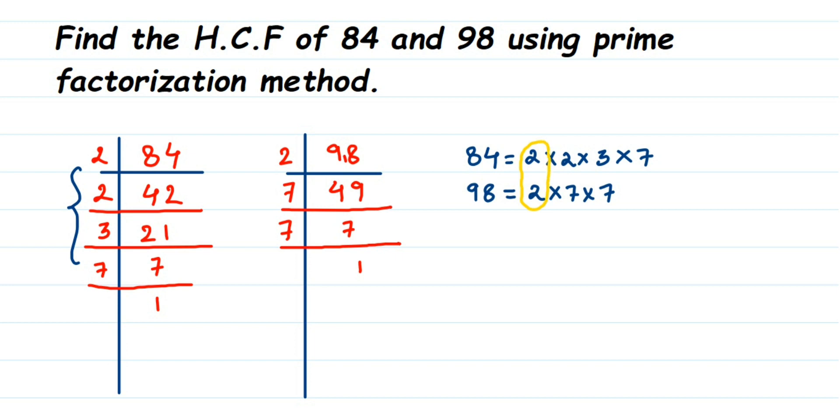Rest of the numbers, you can see there is a 2 here but there's no 2 in 98. And there's a 3 - it's not present in 98. And there's a 7 - it's not present in 84. There's only one 7, but we have already paired it up, right? So we don't have to take that 7 again.